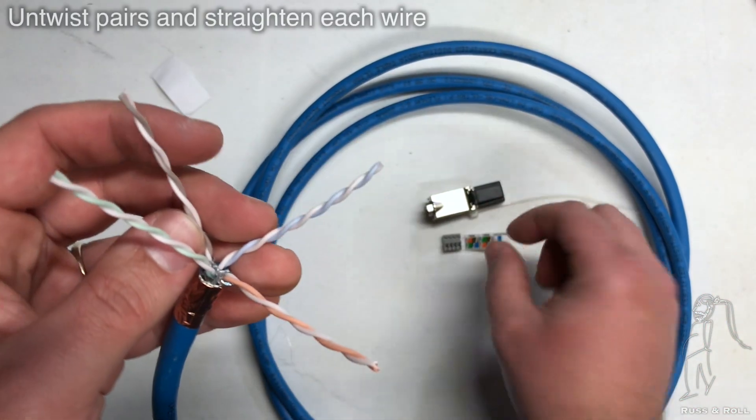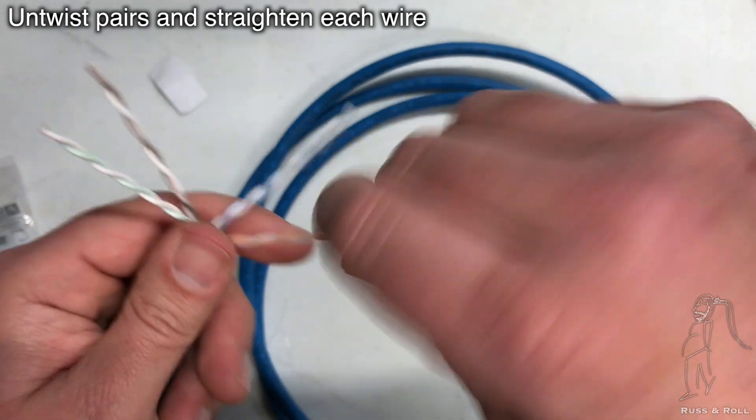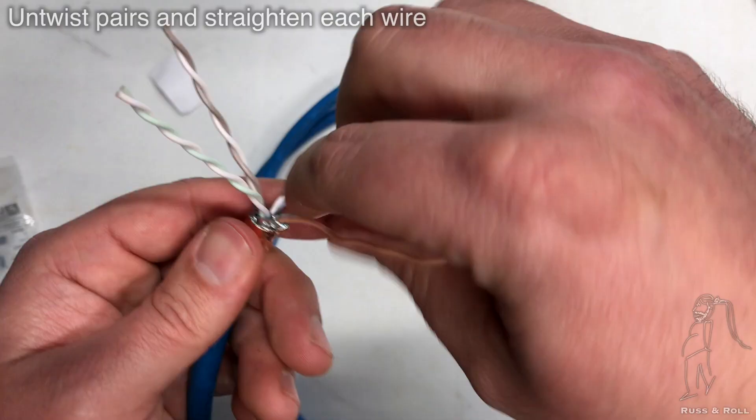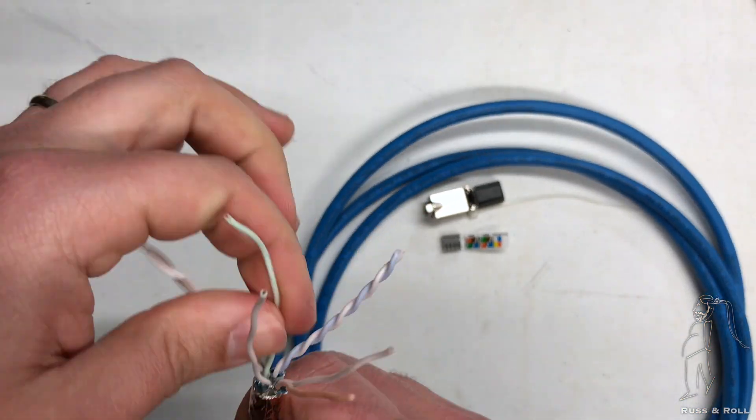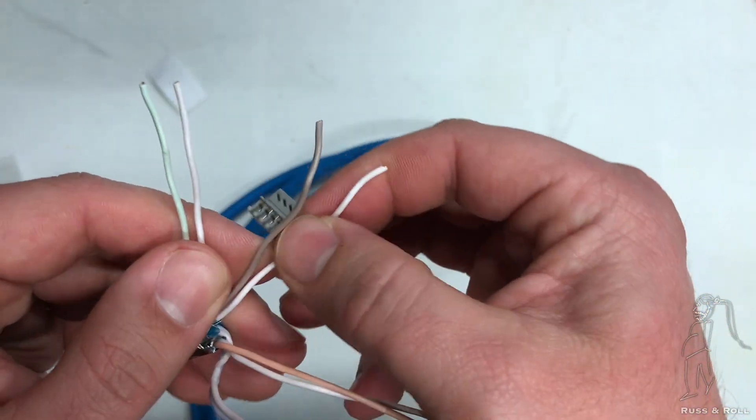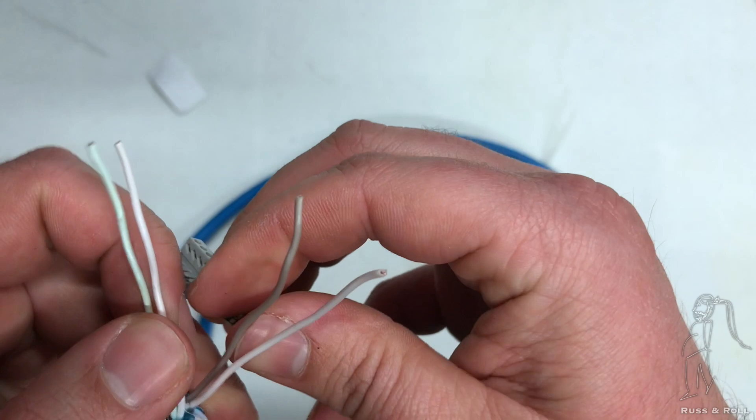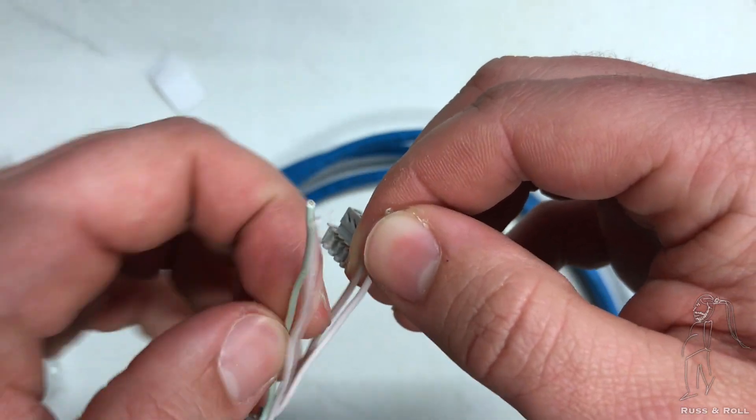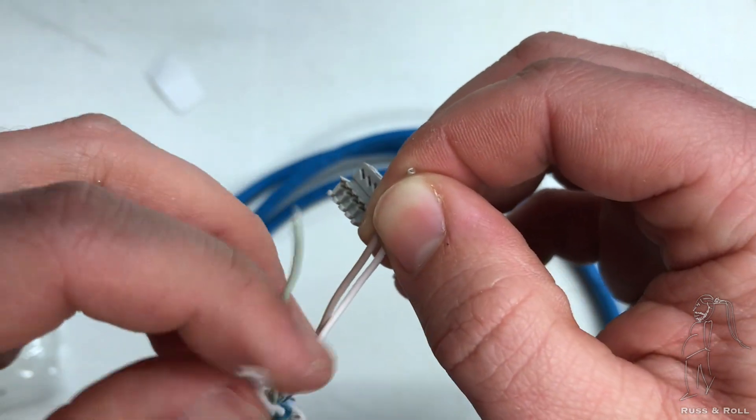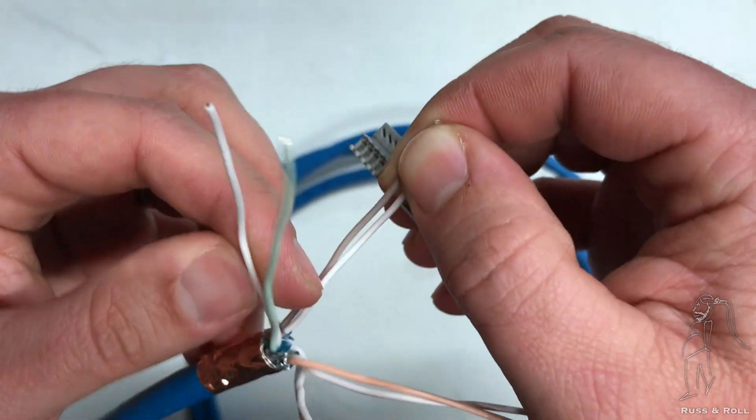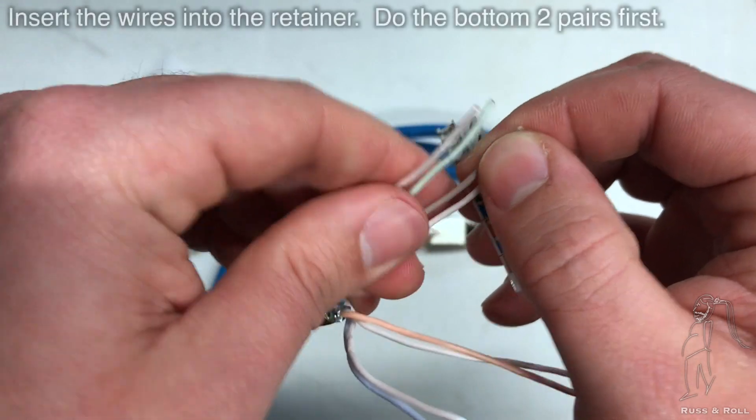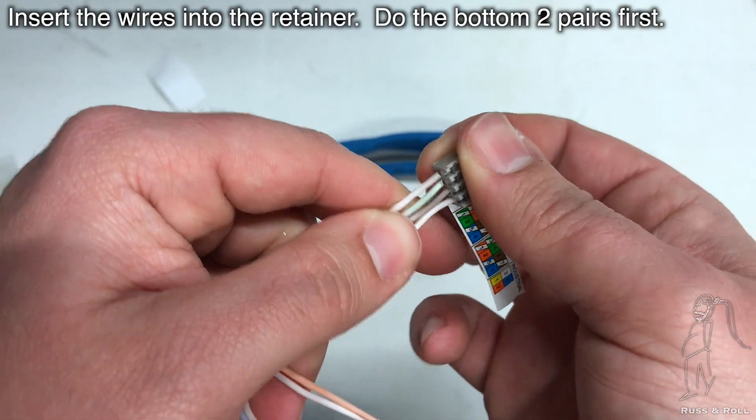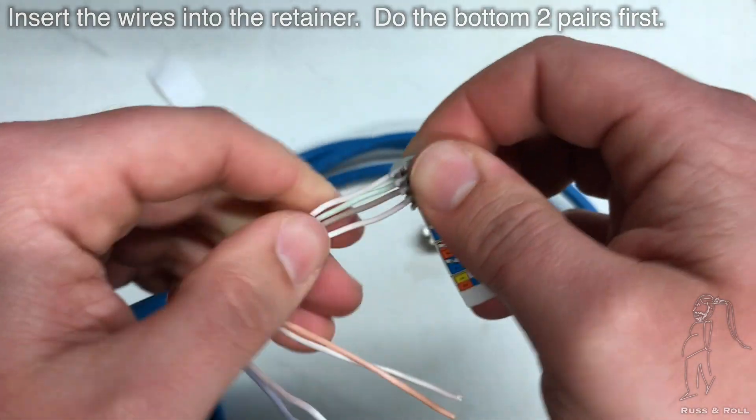This next part might seem obvious, but we do have to untwist each pair and straighten out the wires before we can get them through the retainer. A simple squeeze and pull on each wire should get it straight for you. It is easiest to do these guys in pairs of pairs, so putting all four wires that are next to each other through the holes at once. We're going to start with the green and browns. And we're going to arrange them such that they match the color code that's on the sticker. You're going to try to straighten them out a little bit and try to get them all through those holes at once.